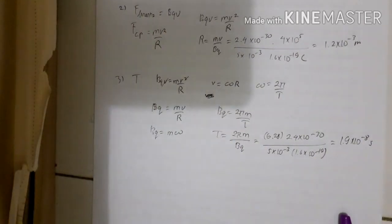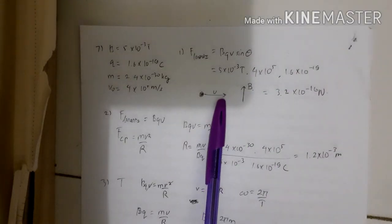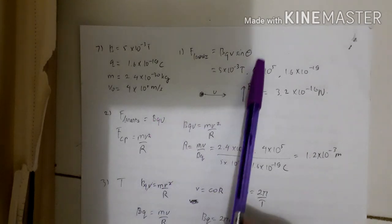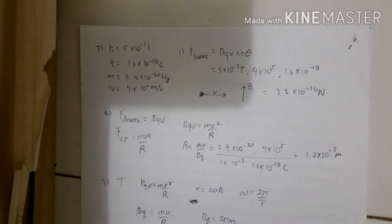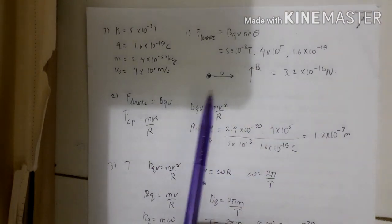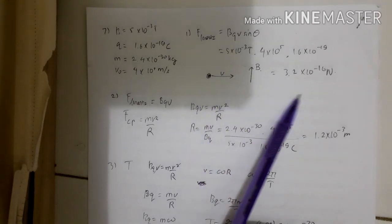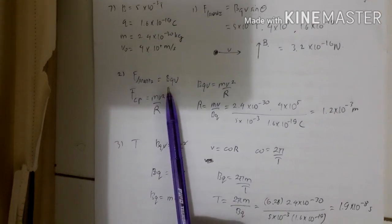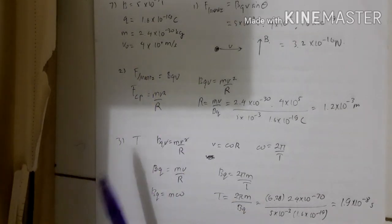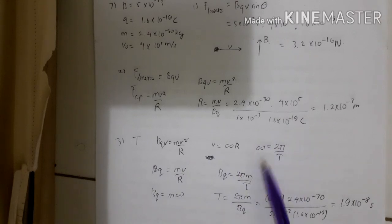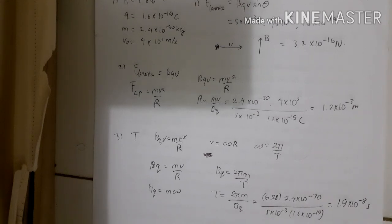That's it for part 7. The key is the Lorentz force formula F = BQV sinθ, remembering that θ is the angle between V and B. When the particle undergoes rotational motion, you combine the Lorentz force with the centripetal force principle. For the period, use the angular velocity formula ω = 2π/T. Stay tuned for other parts of Cousin Physics 2016.